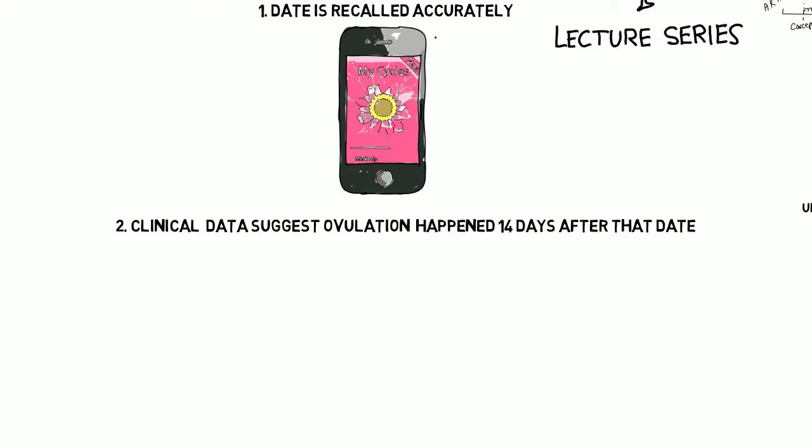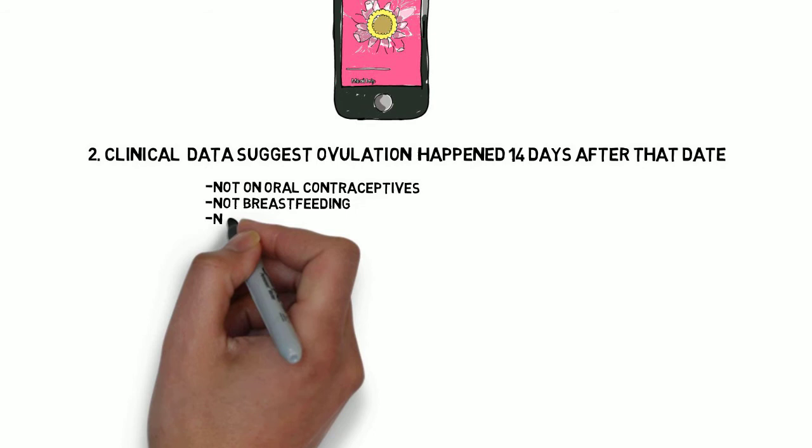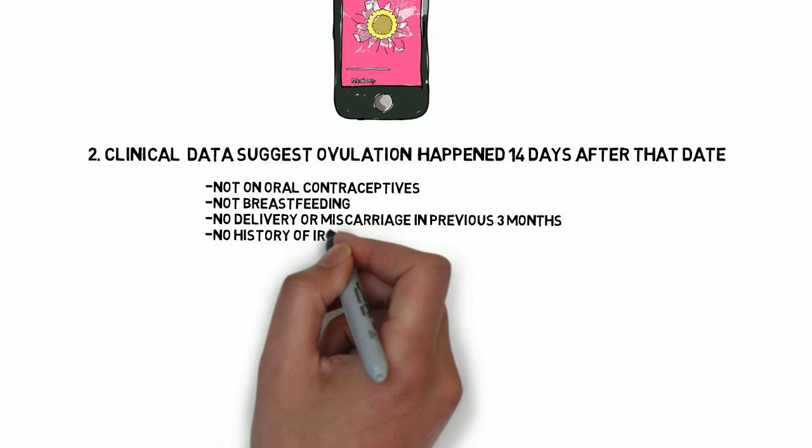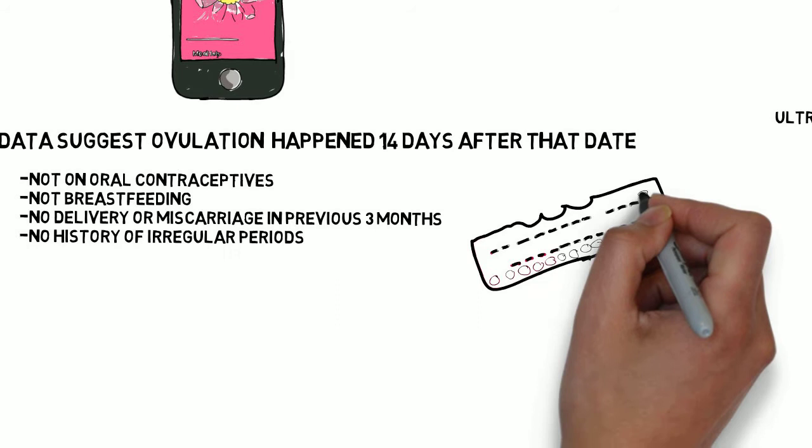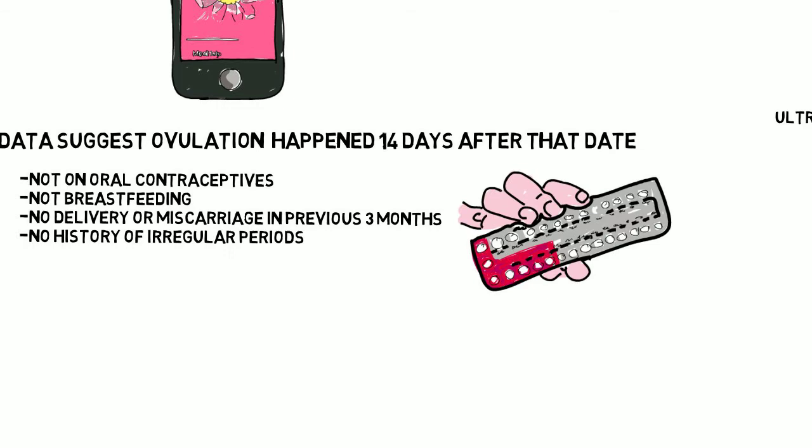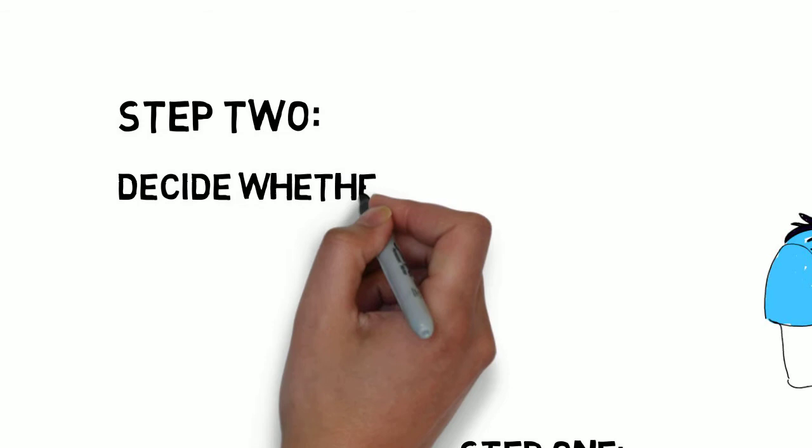Clinical data that would suggest that the LMP does not reliably predict when ovulation occurred includes conception while on oral contraceptives, breastfeeding, delivery or miscarriage in the previous 3 months, a history of irregular periods, or that the last period was atypical. If these criteria are not met, the LMP is probably not informative to use and should be disregarded. Assuming the criteria are met, that is our starting point.